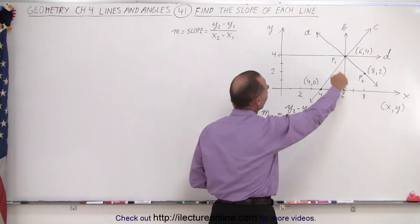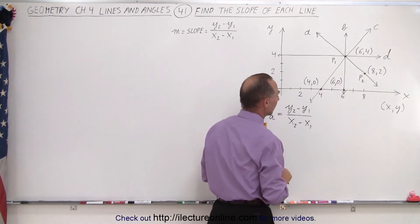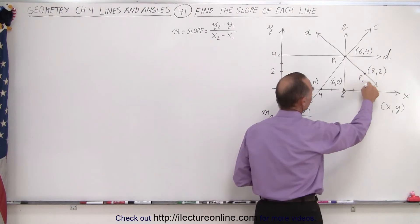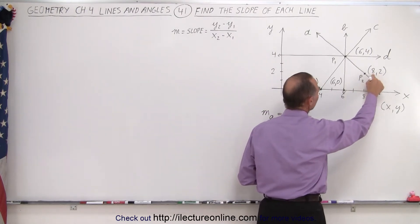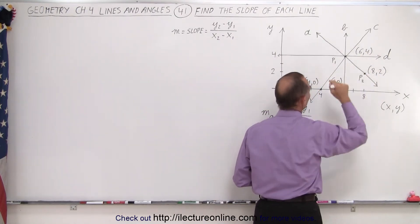And those two points lie on line a. And since this is point two, that would be y2, this would be x2, this is y1 and x1.